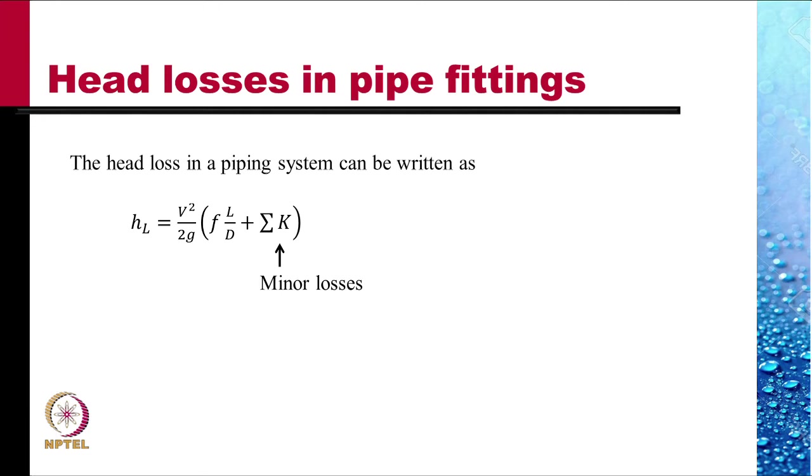Summation k is called the minor losses because in most piping system F L by D is much larger than summation k.